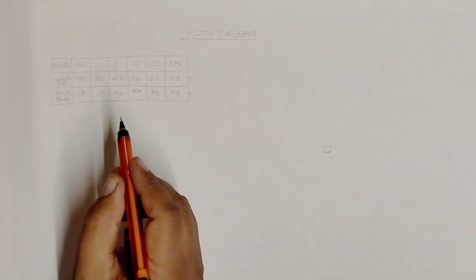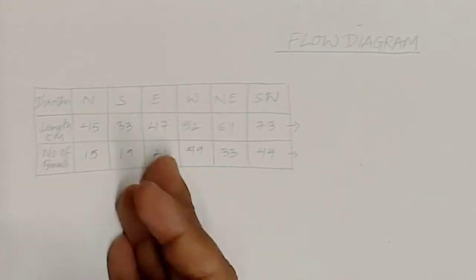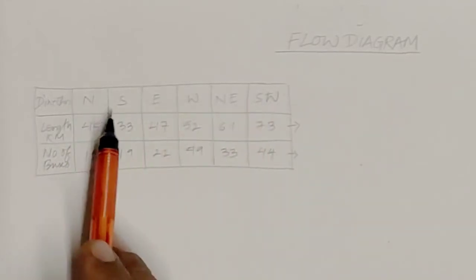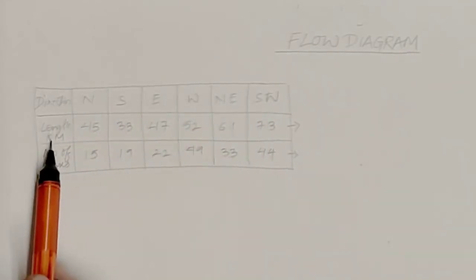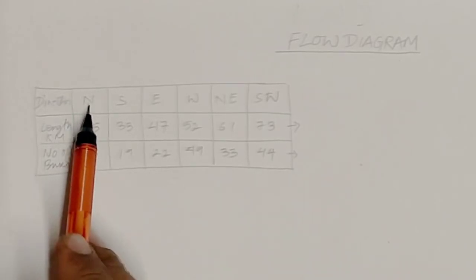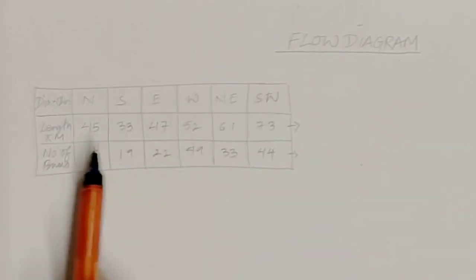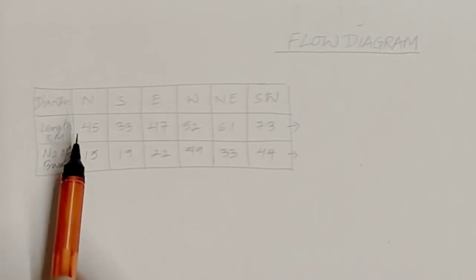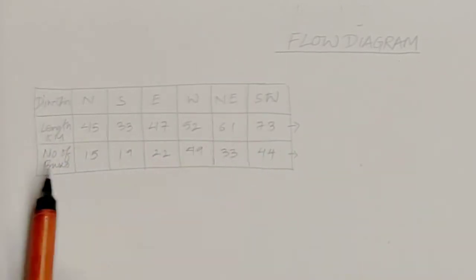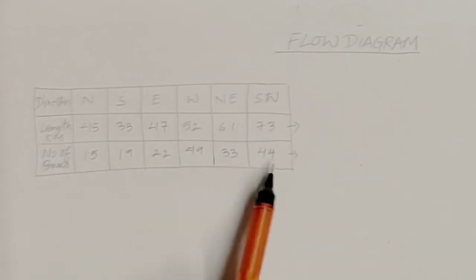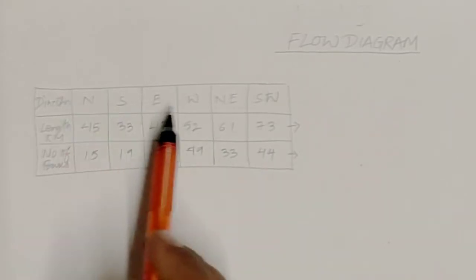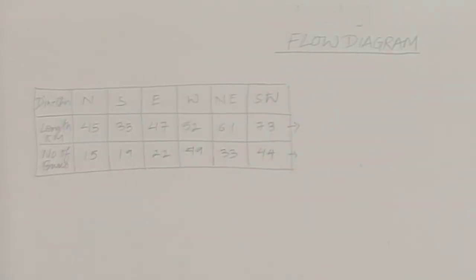Without much delay, let's start the video. The data provided to us has three different rows: directions, length, and number of buses. The directions are North, South, East, West, Northeast, and Southwest. The lengths of the road towards the respective directions are 45, 33, 47, 52, 61, and 73. The number of buses plying on each road is 15, 19, 22, 49, 33, and 44.